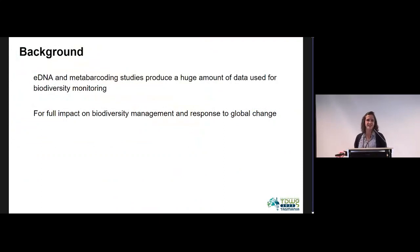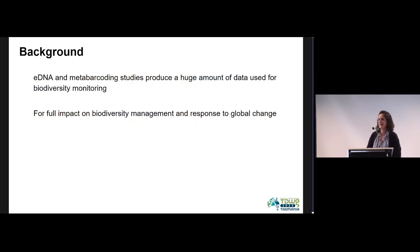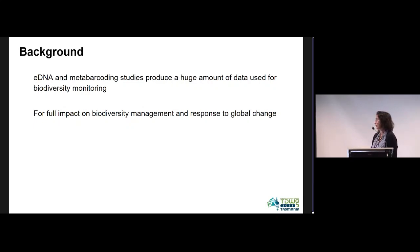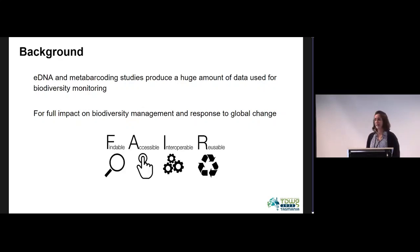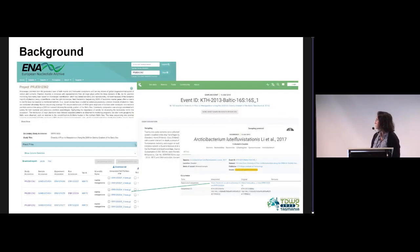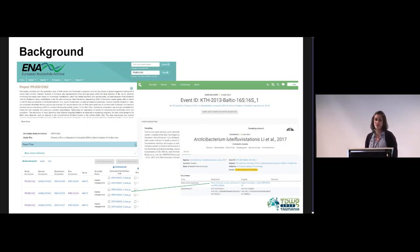Just as context, the development of high-throughput sequencing has boosted the generation of a lot of data around eDNA and metabarcoding studies. It is very important that this data becomes widely available so it has a greater impact on biodiversity management and responses to global change. We need to make this data FAIR. There are already datasets available at ENA, GBIF, and other databases like the ASV database, and sometimes this data is even linked — for example, a dataset in GBIF linked to raw reads deposited at ENA. But unfortunately, this is only a minor amount of data compared to what is produced.